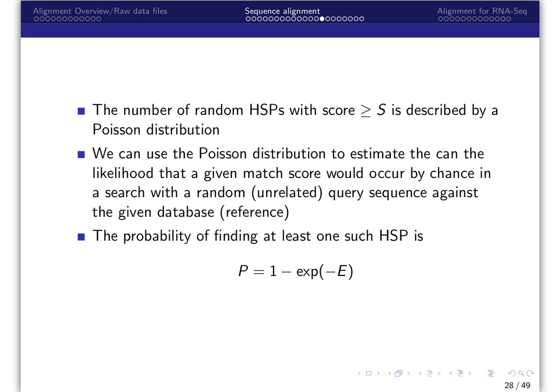For example, if one expects to find three high-scoring segment pairs with a score of greater than or equal to S, the probability of finding at least one is 0.95. The BLAST program reports E value rather than P value because it is easier to understand the difference between, for example, an E value of 5 and 10 than P values of 0.993 and 0.99995. However, when E is less than 0.05, P values and E values are nearly identical.